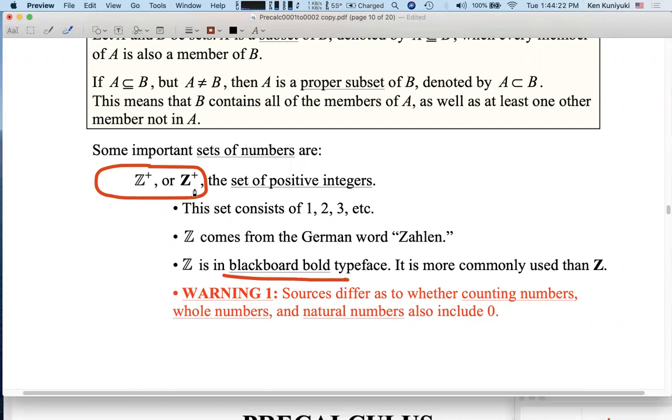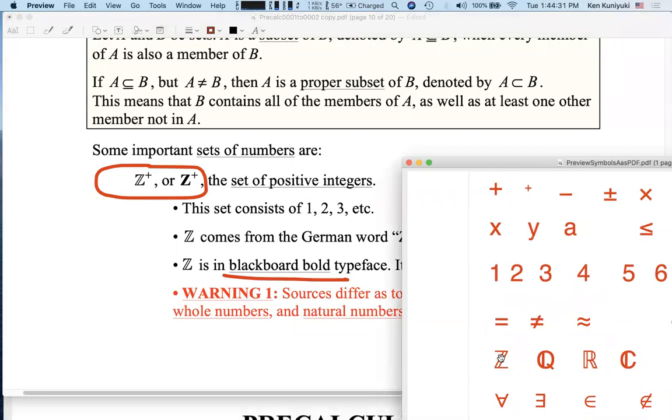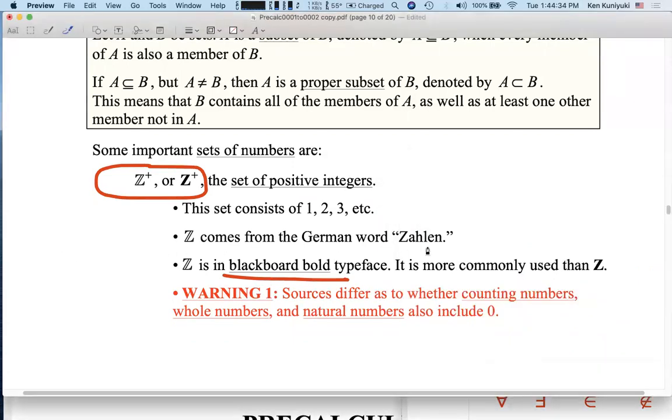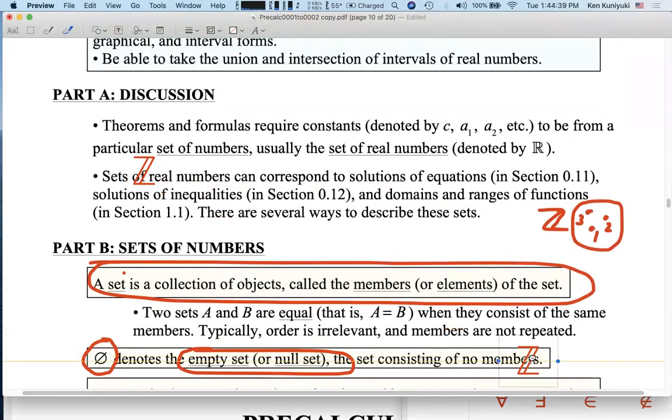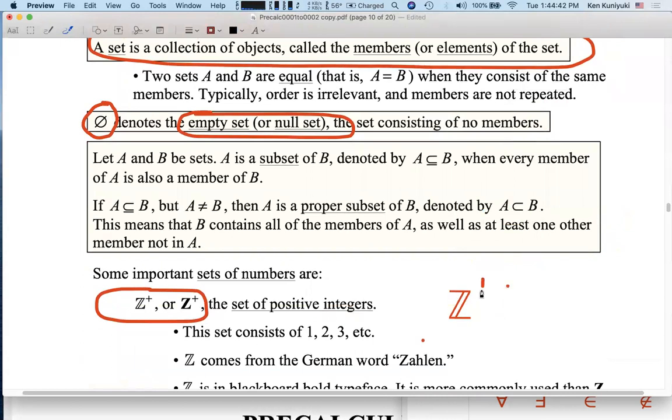All right, Z plus is the set of positive integers, and it consists of, so the set Z plus consists of the following set: 1, 2, 3, and so on. That's the set of positive integers.